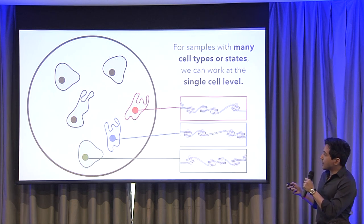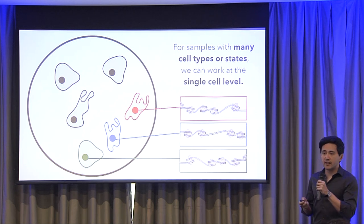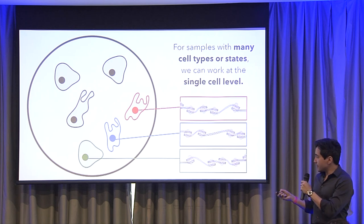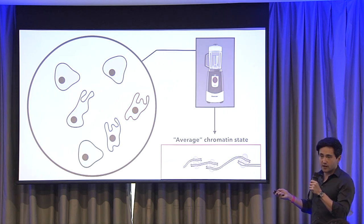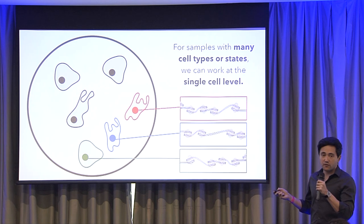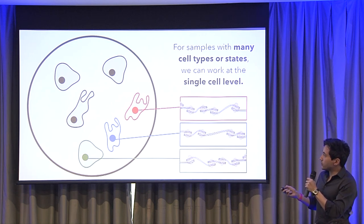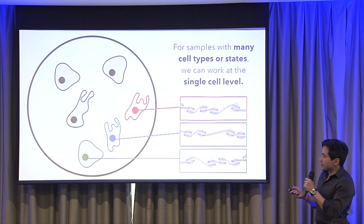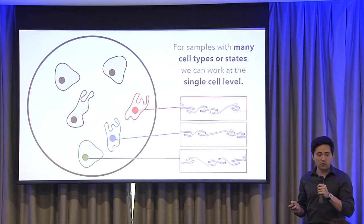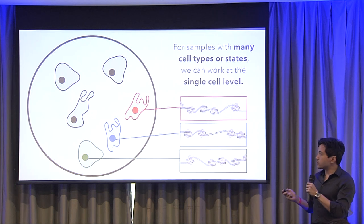More recently, within the last decade, there's been a revolution in this type of assay. Rather than taking that average, we're now actually capable of profiling the chromatin state of every single cell in your sample, one at a time, and then collecting all that information. We'll know that the open and closed regions of DNA look like this for one cell, like that for another cell, and like that for another. This is very, very powerful for understanding the heterogeneity of a tissue.